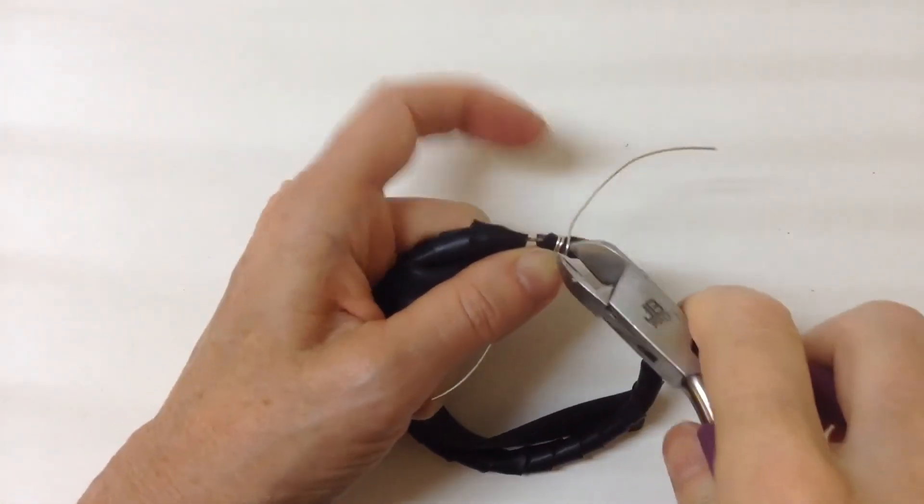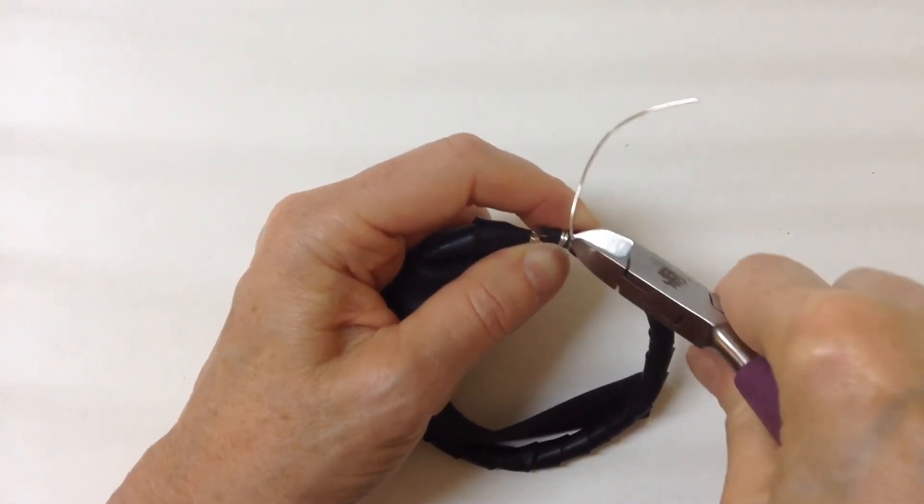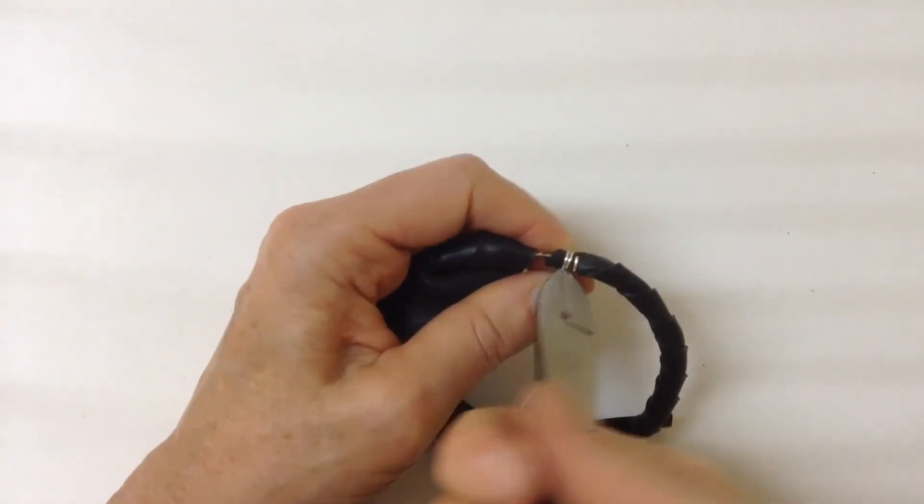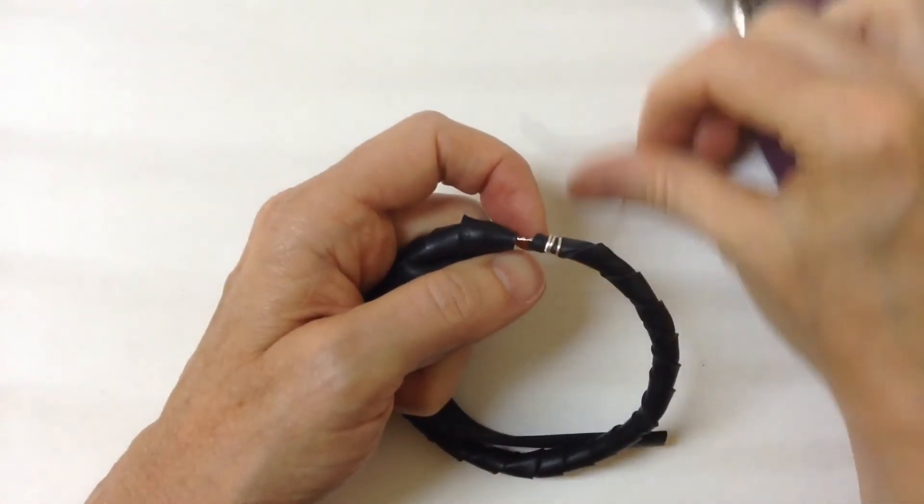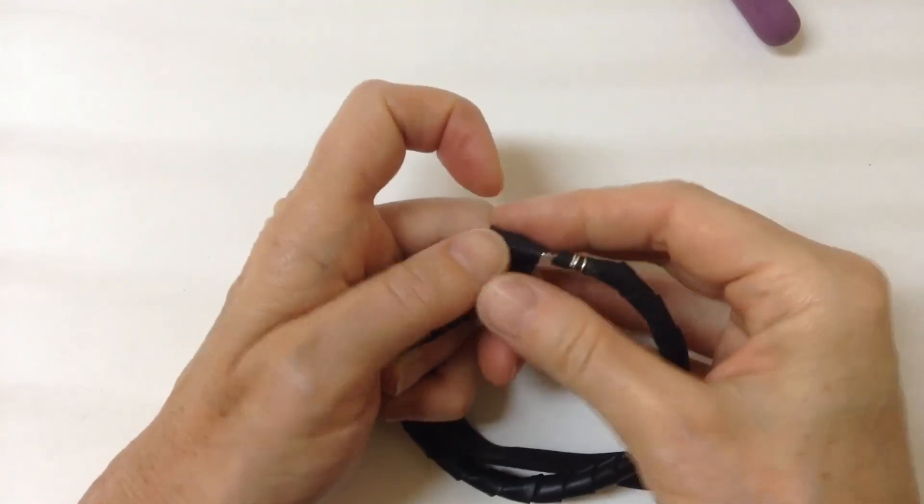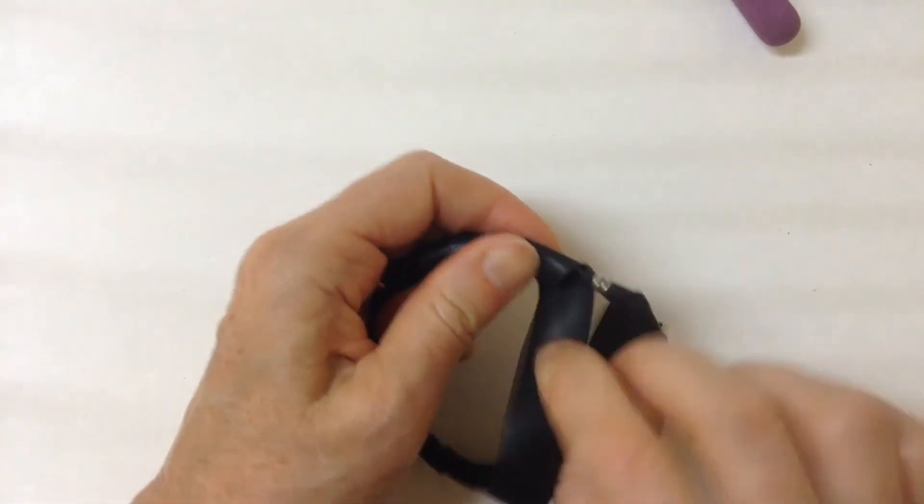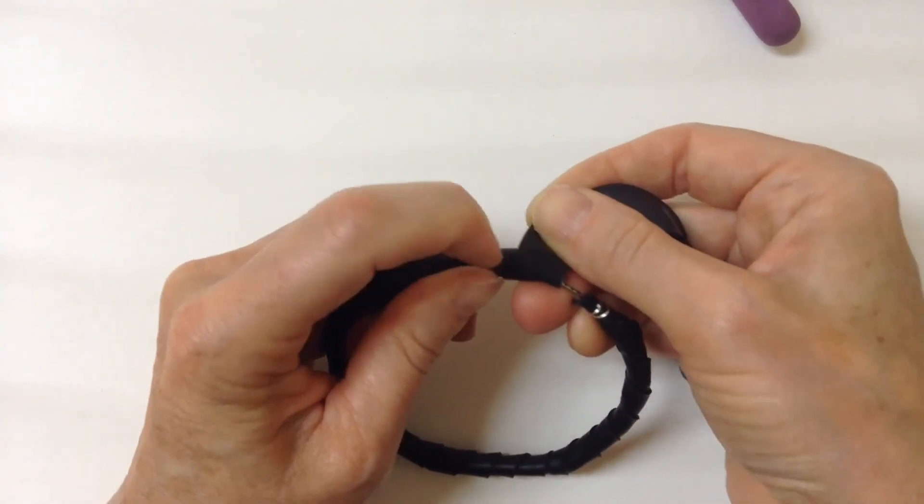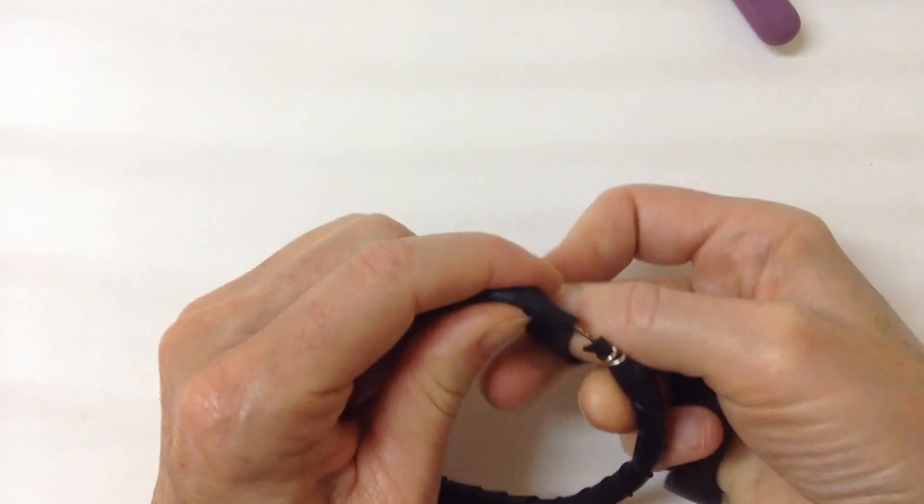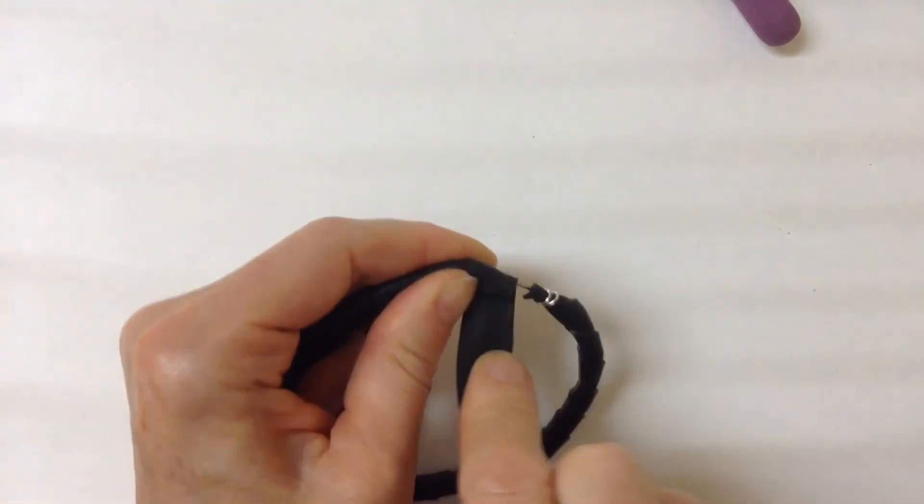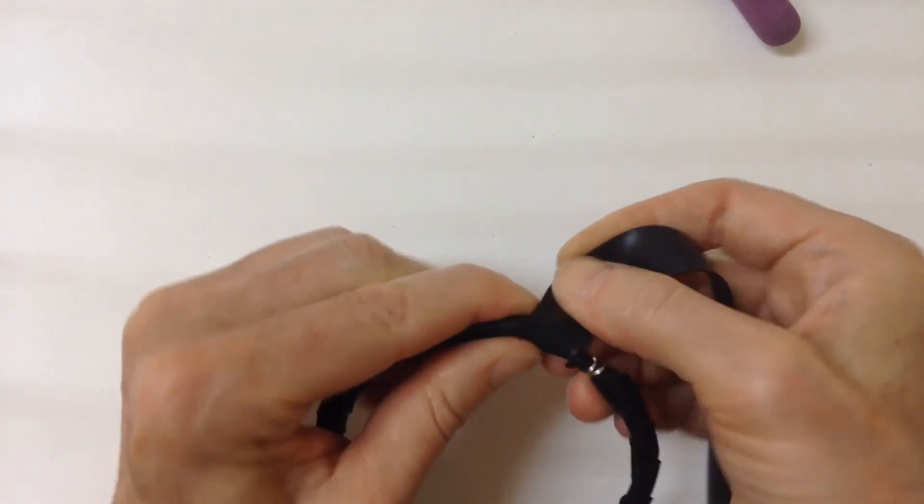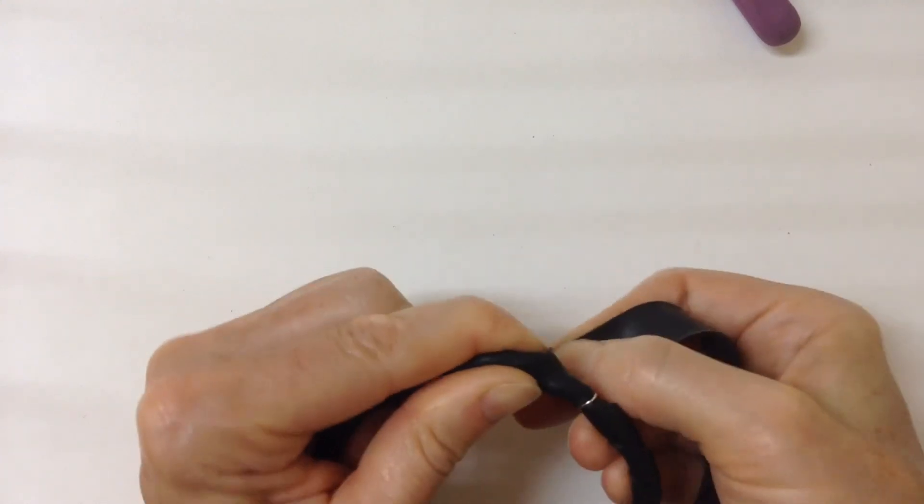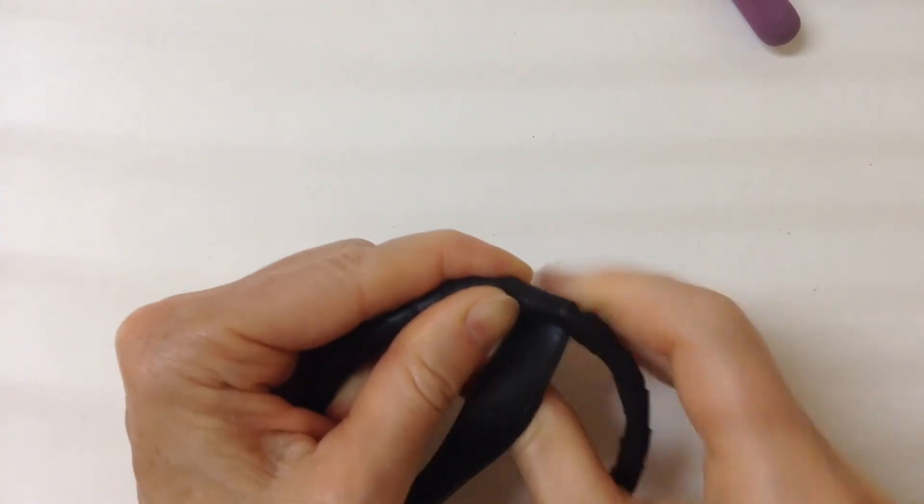So as you get to the end, I'm actually going to clip these wires where I started. And then what you want to do is overlap this bit here. We're pulling it really tightly as we go. You're overlapping about a quarter inch so it holds the previous piece in place. And we're just going to wrap it around until we've bypassed that little wire bit there.